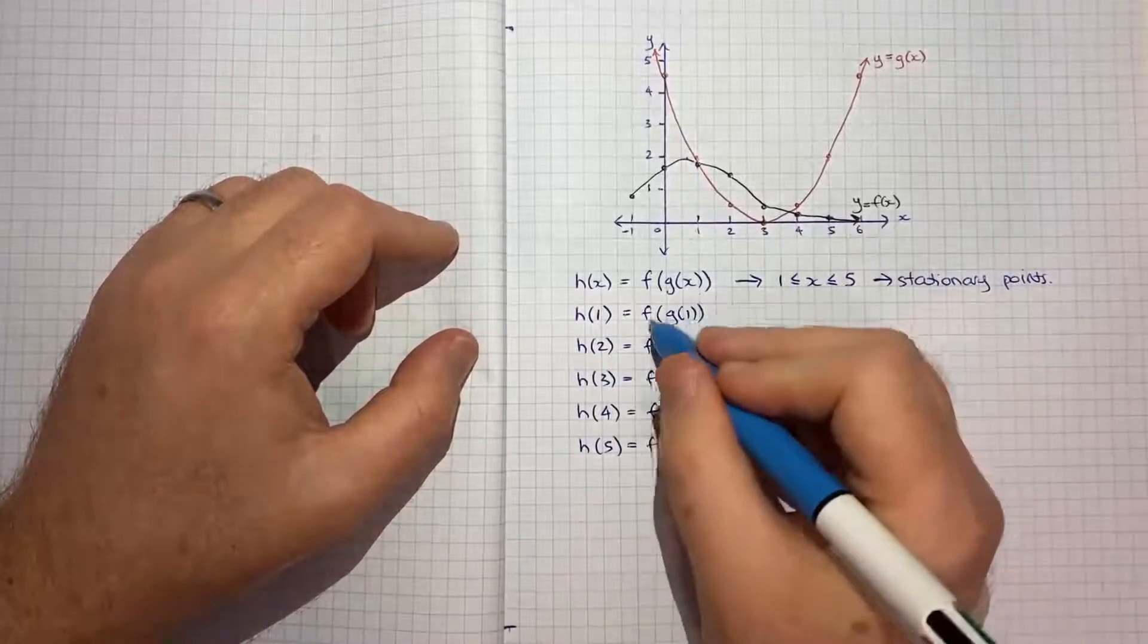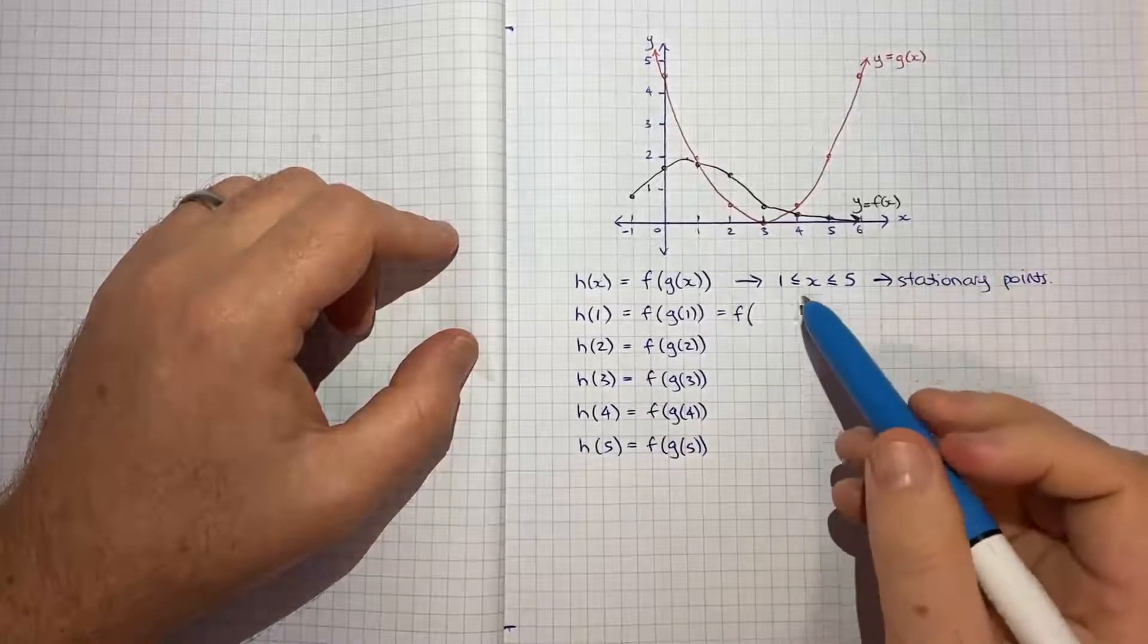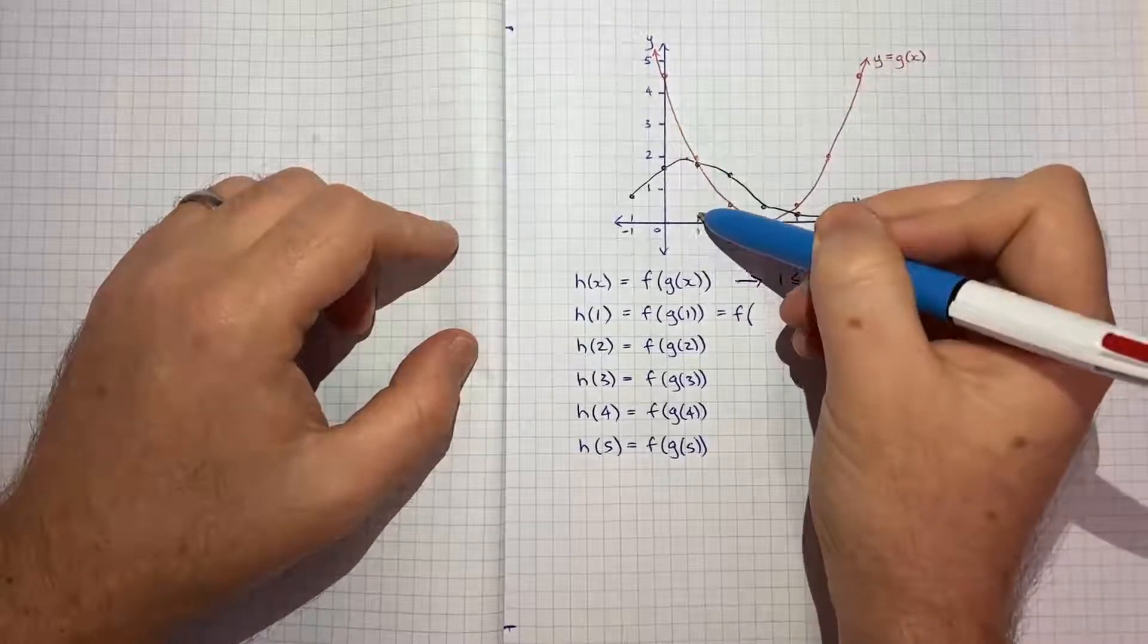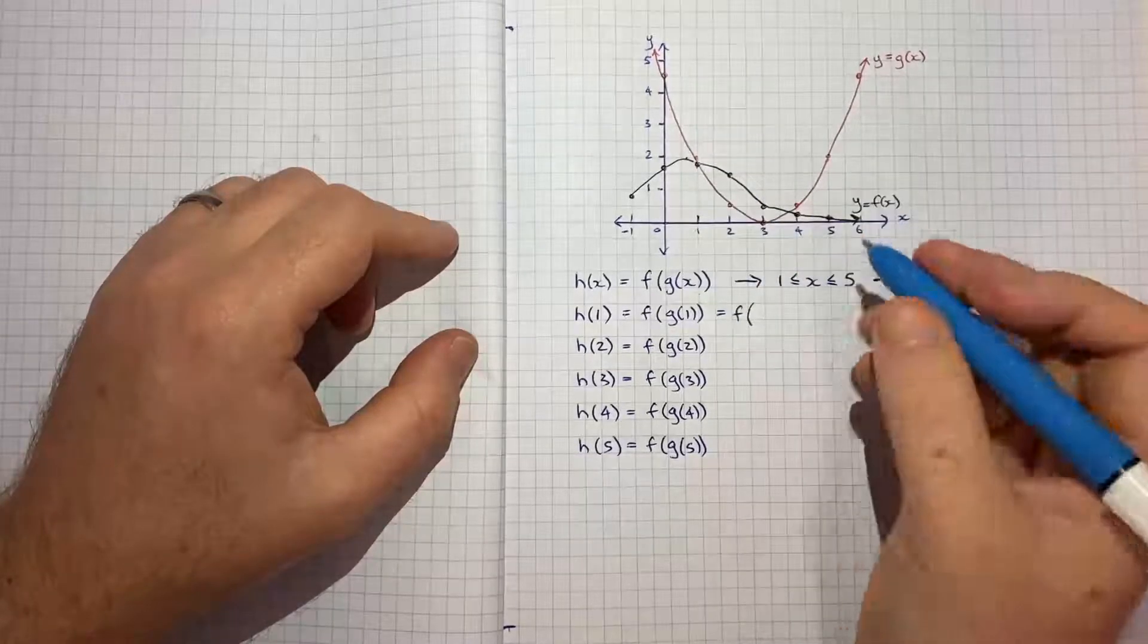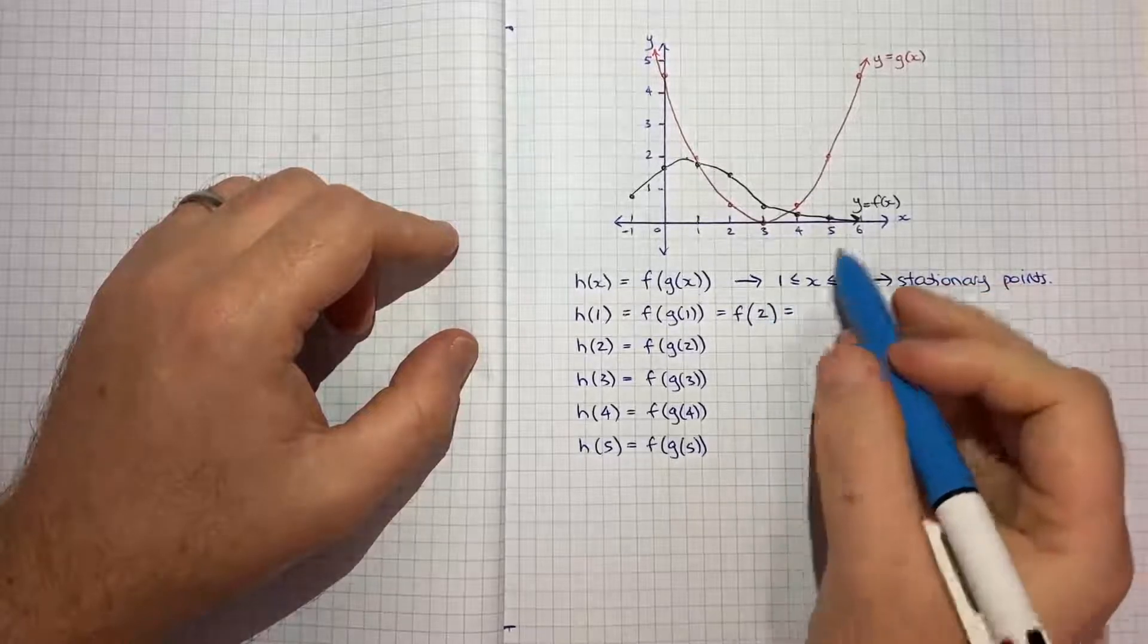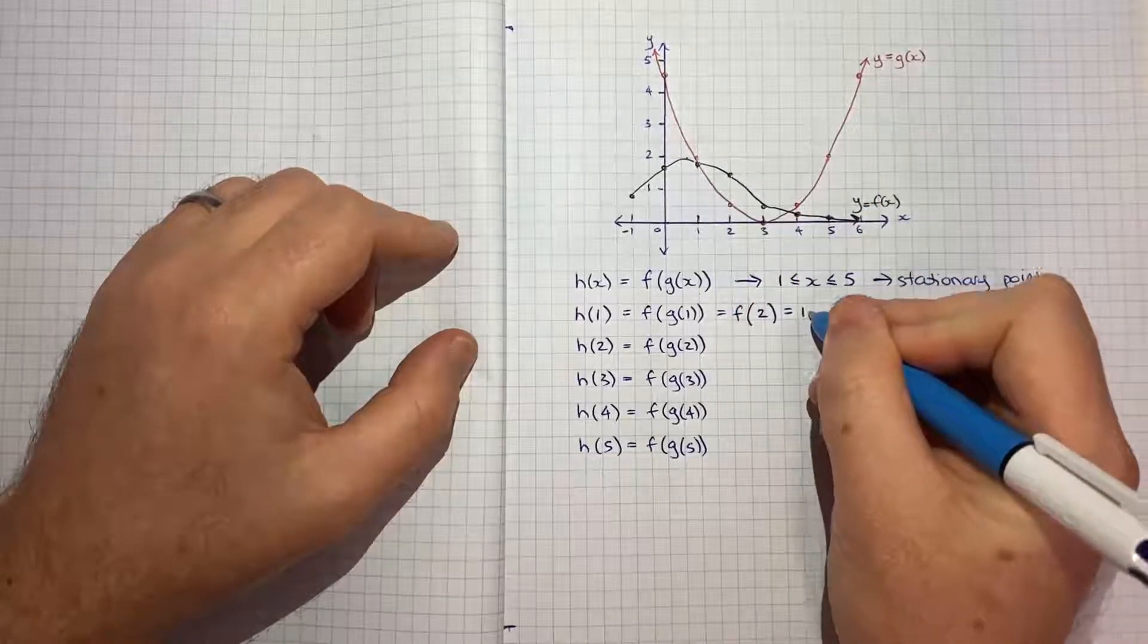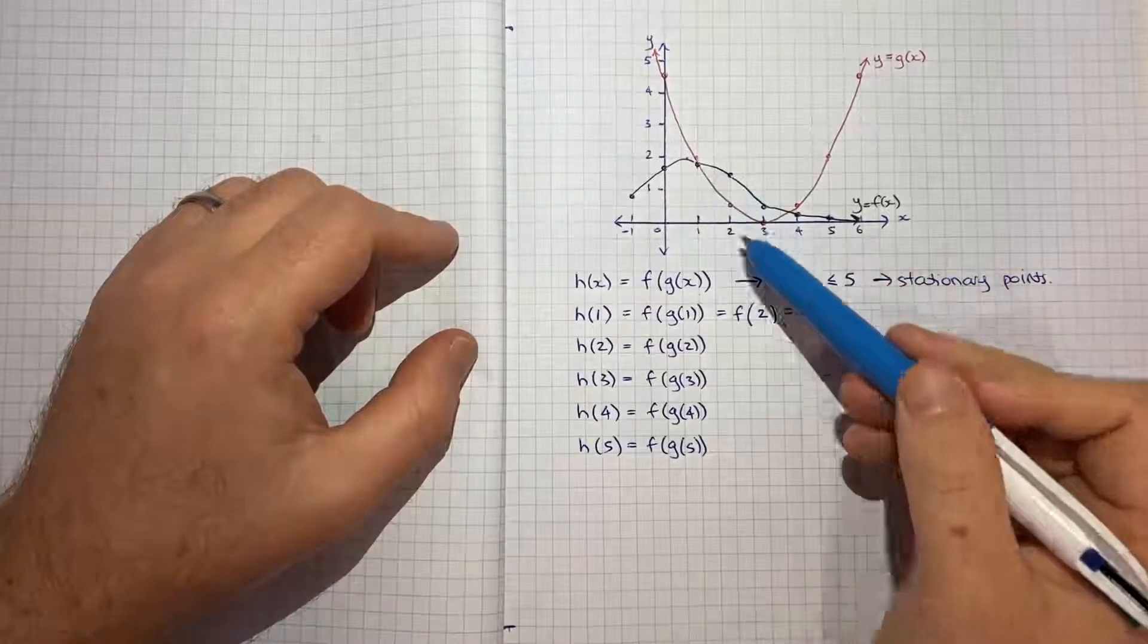So if I start here with h 1, f of g of 1 will be equal to f of whatever g of 1 is. So if I go x equals 1, what is this red curve g? It's 2. I mean it might not be exactly 2 but it's close enough to 2. So then I have to go well when x is 2 what is f of x. So when we go to 2, f of x is about 1 and a half. And again that's just kind of based on inspection.